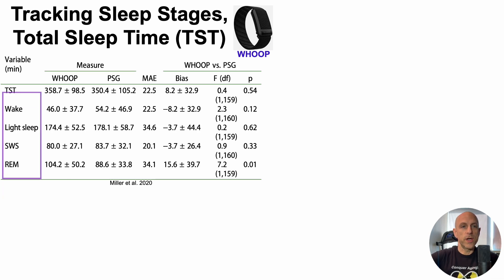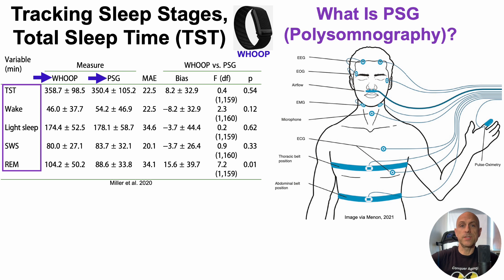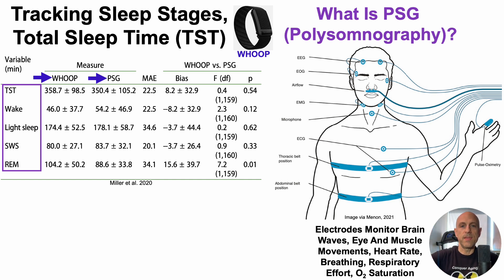Here we'll look at individual sleep stage data in terms of minutes per night, comparing Whoop against PSG — polysomnography — the gold standard for sleep studies. PSG is the gold standard in part because subjects are electroded and monitored; the electrodes track brain waves, eye and muscle movements, heart rate, breathing, respiratory effort, and oxygen saturation via pulse oximetry.